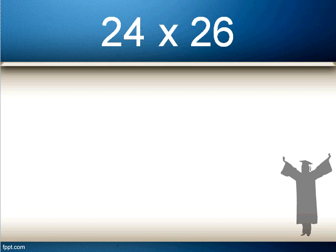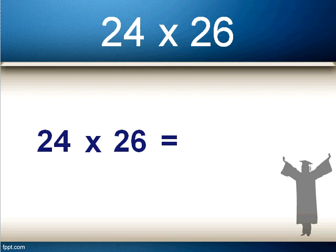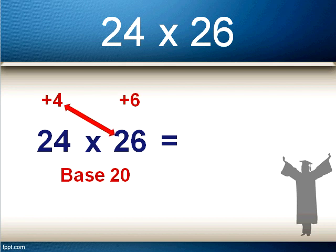We'll now look at 24 times 26. They're both pretty close to 20, so we use 20 as our base number. 24 is 4 more than 20, so plus 4; and 26 is 6 more than 20, so plus 6. The first step: add the 4 to the 26, which is 30, or the 6 to the 24, which also gives 30. Getting the same number is a useful double check.